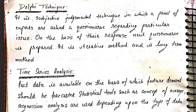Before going to objective techniques, which involve mathematical equations, we will first get a flavor of subjective techniques to predict the future. In the last class I mentioned there are judgmental techniques used to forecast the future where we have a team of experts. One such technique is the Delphi method, which is a subjective judgmental technique.